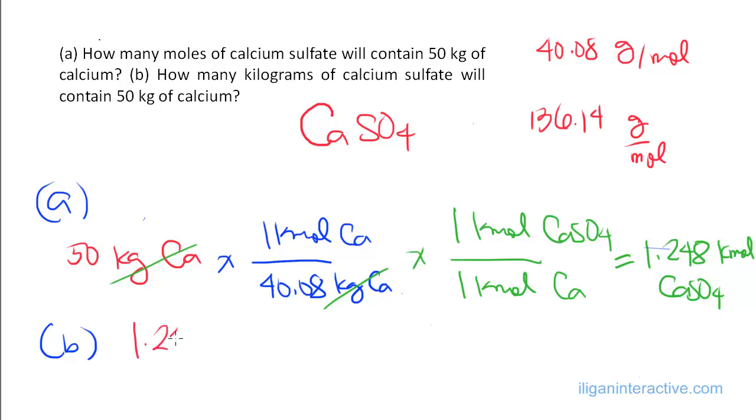Converting this 1.248 kilomoles of calcium sulfate into kilograms. So we just multiply that by the molar mass, which is 136.14 kilogram per 1 kilomole for calcium sulfate.